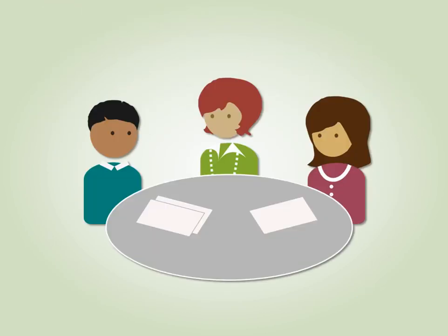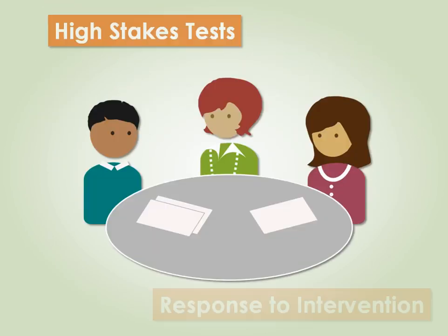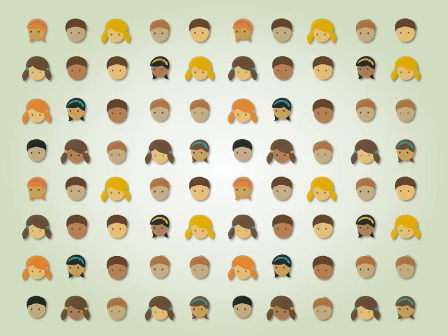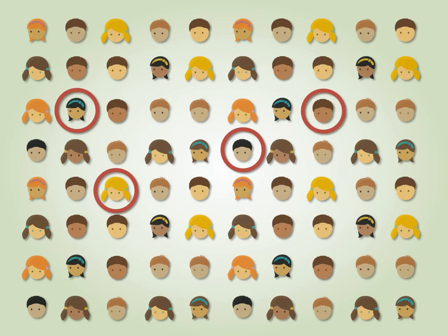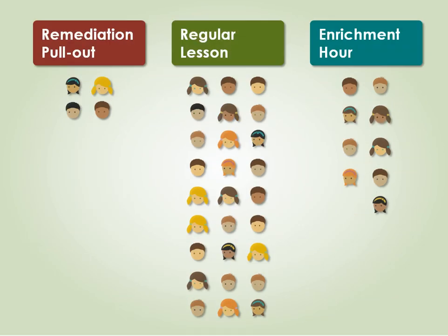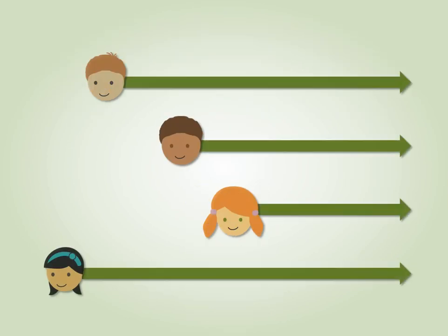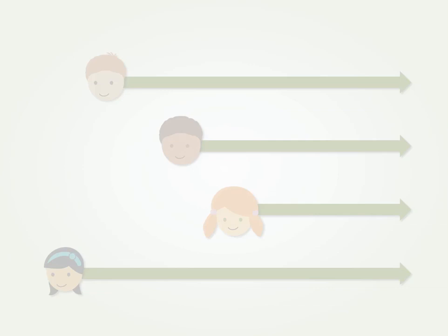Jane met with her instructional team to plan for the year. With mounting pressures and a slew of responsibilities, they agreed: in order to identify students at risk and differentiate instruction to meet everyone's needs, they first need to figure out where each student is starting out and use that information to plan specific instructional next steps. But how?